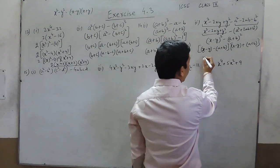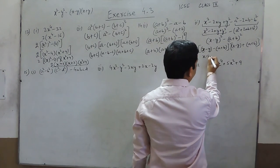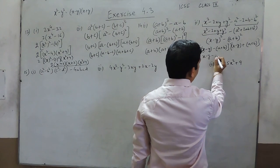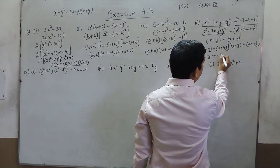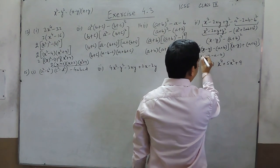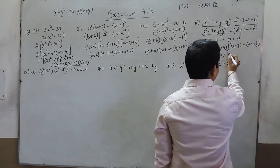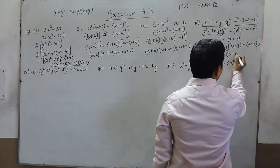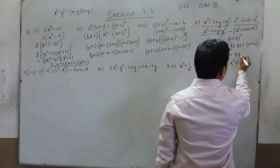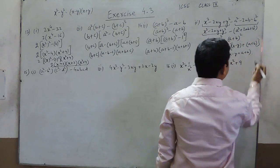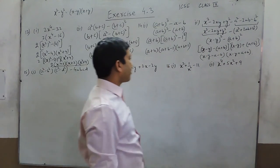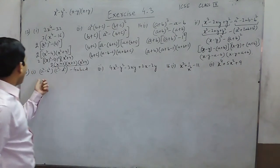When we finally solve it, it is x minus y minus a minus b as the first factor and x minus y plus a plus b as the second factor.